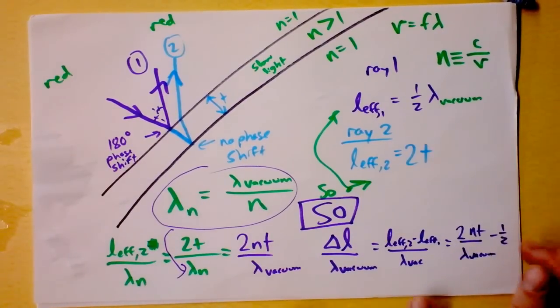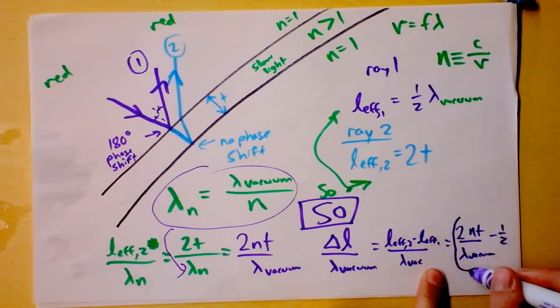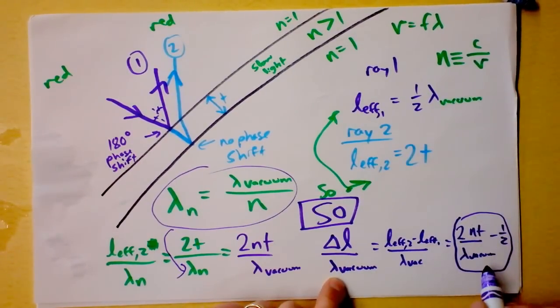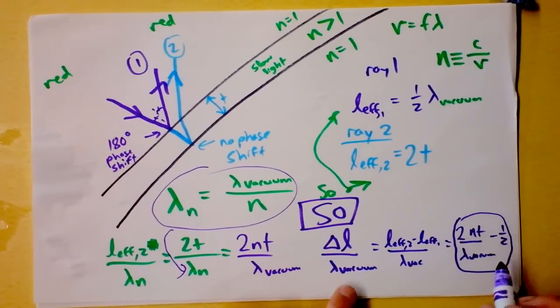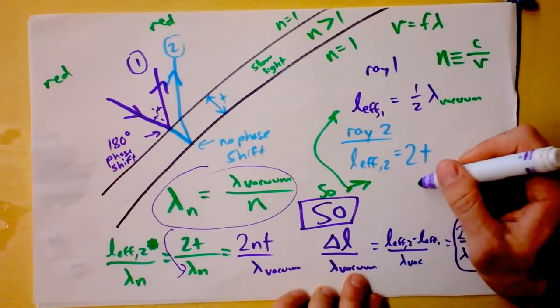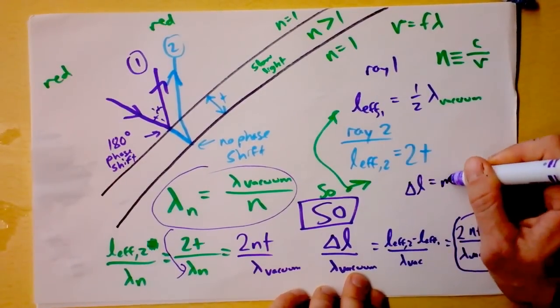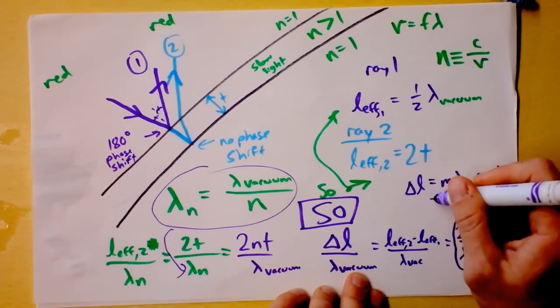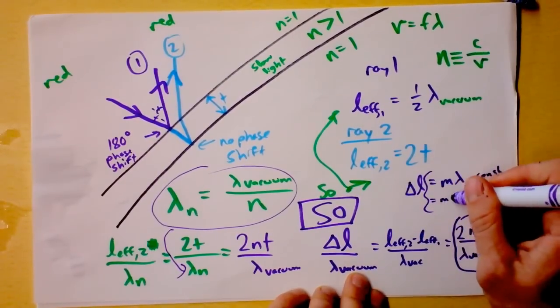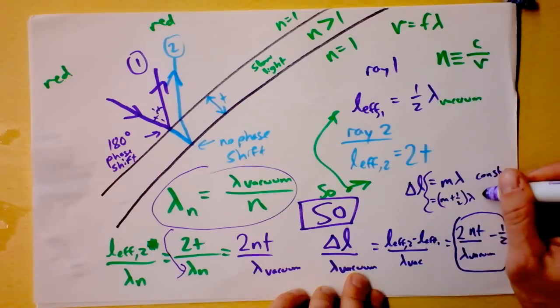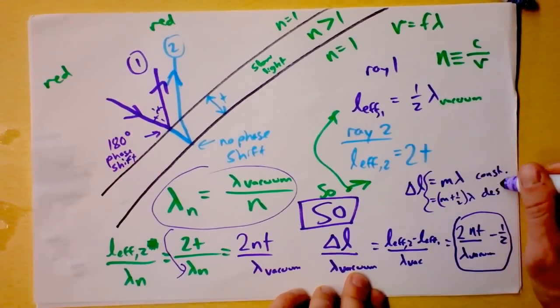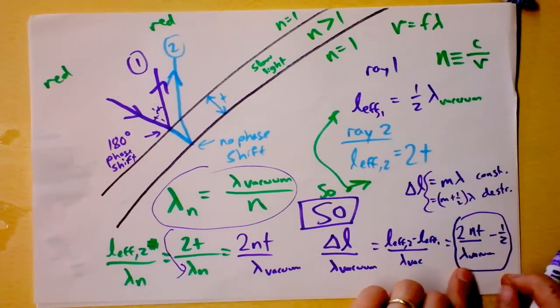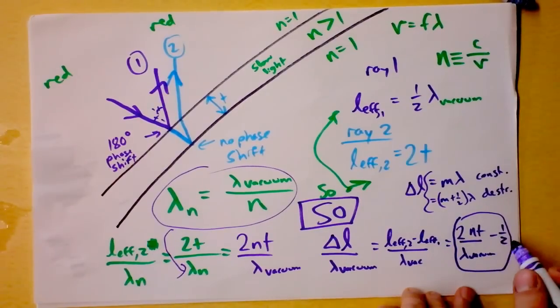So here's the point. My point is, if this thing, this actual path length difference divided by lambda in a vacuum is an integer value, it means that we're going to have constructive interference. Do you remember the principal equation of interference? It says if the path length difference is some integer times the wavelength, then we have constructive. And if we have that thing equal to m plus a half, some half integer times the wavelength, then we have destructive. And so my point is, this is what delta L over lambda is. And so if we've got, oh my gosh, look at that really complicated equation.